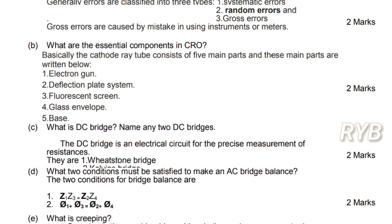What are the conditions that must be satisfied to make an AC bridge balance? The two conditions for bridge balance are: the product of opposite arm impedances should be equal to the product of the other opposite arm impedances, and the phase angles must satisfy θ1 + θ3 = θ2 + θ4.